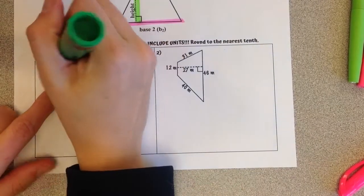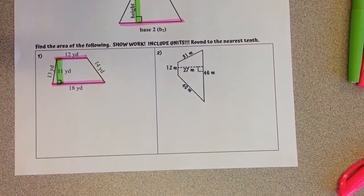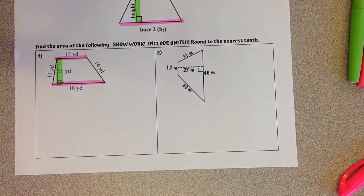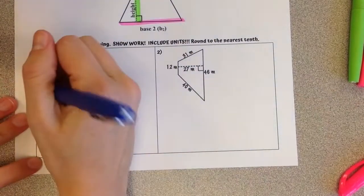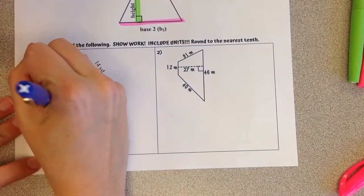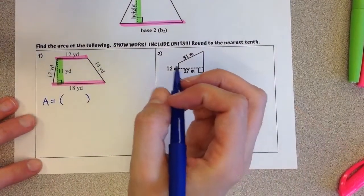And then I find that 90 degree measure, which I see with the dotted line there, is my height. So yes, we can use a calculator for this unit, but you should be showing what you are plugging into the calculator. I'm going to plug in our area equals, in parentheses, our bases added together.